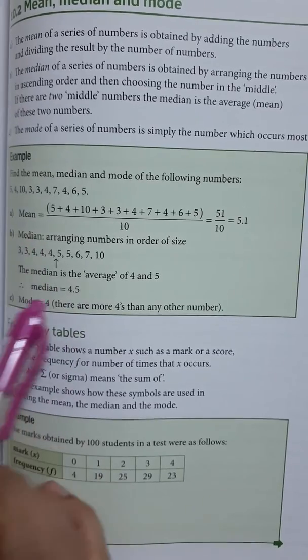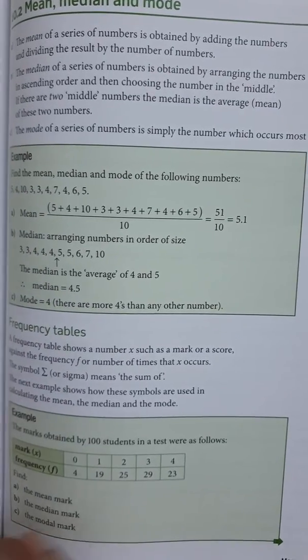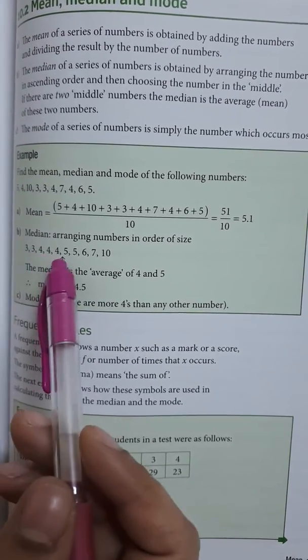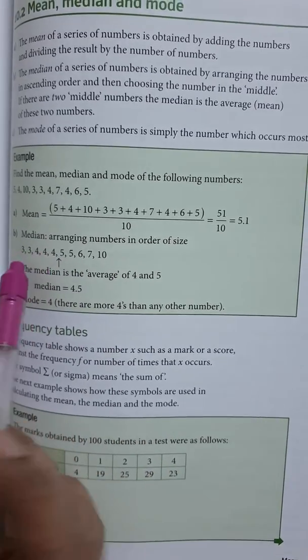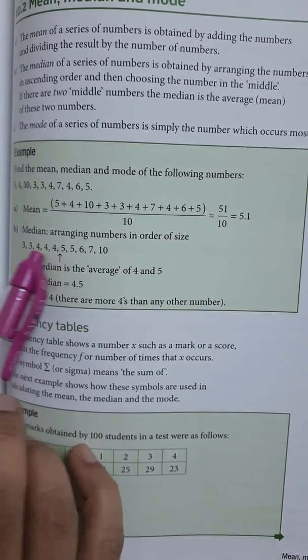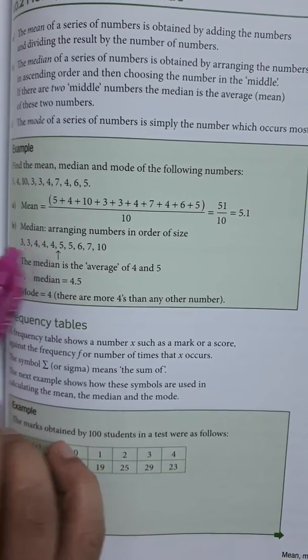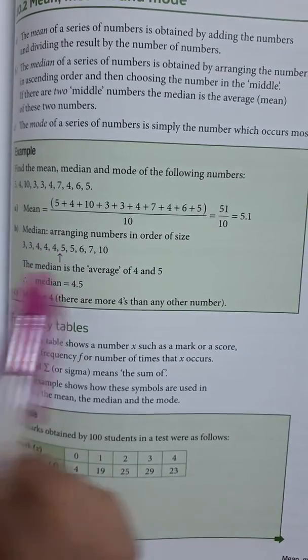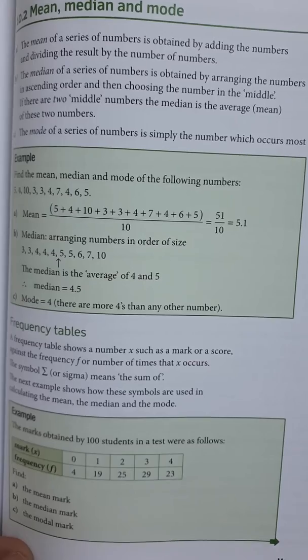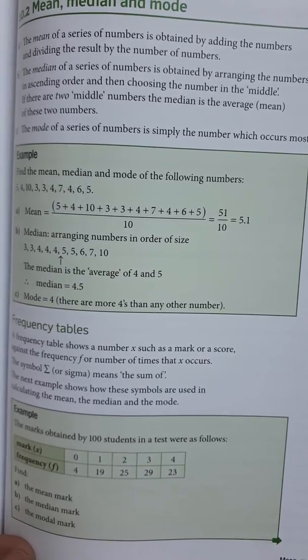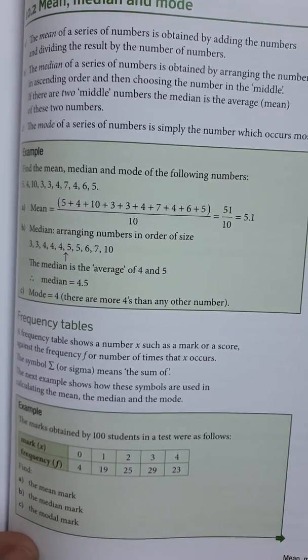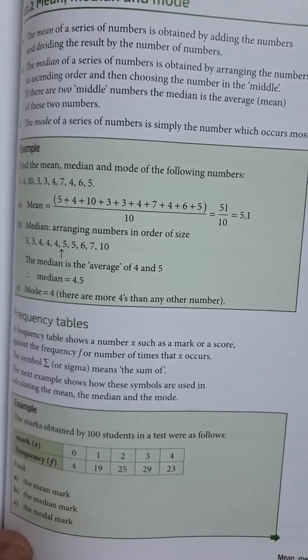Mode, you just have to check which number is coming more often. So if we see the count, 4 is coming 3 times. Rest all the numbers like 5 is coming twice, 3 is coming twice, but not thrice. So we can see 4 is coming thrice, so the mode of this particular series is 4, which is occurring 3 times.